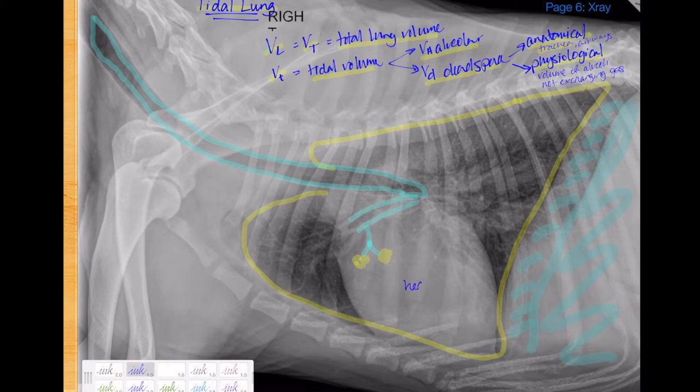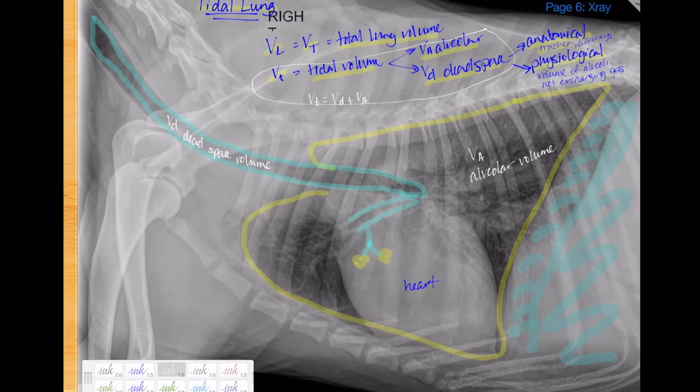This is his heart, and of course the lungs surround the heart. VA is the alveolar volume. This here is VD or dead space volume. So you can see that the total amount of one breath is just VA plus VD or VT. So what happens when TimTam takes a breath?